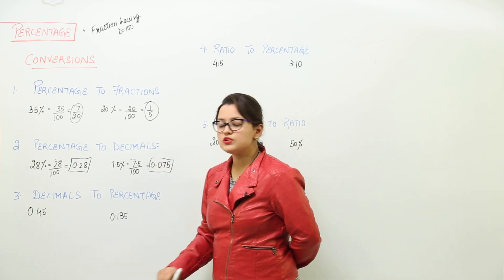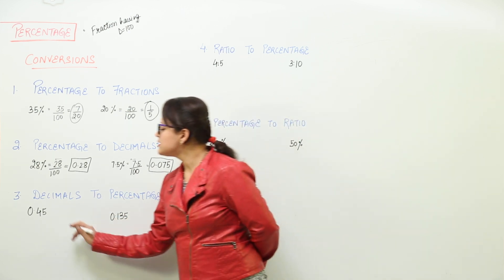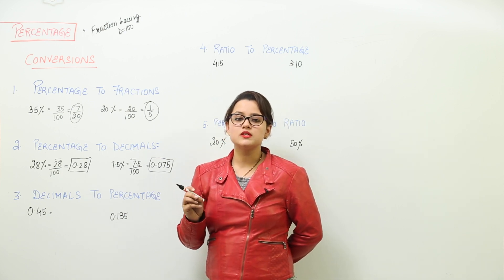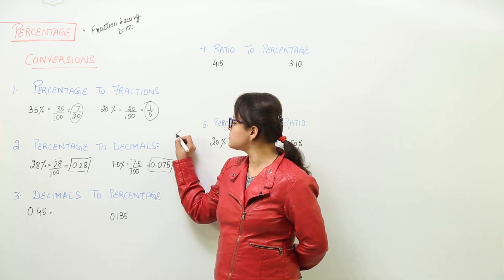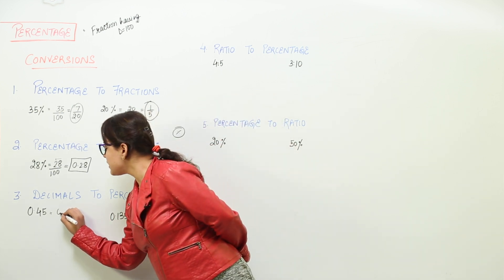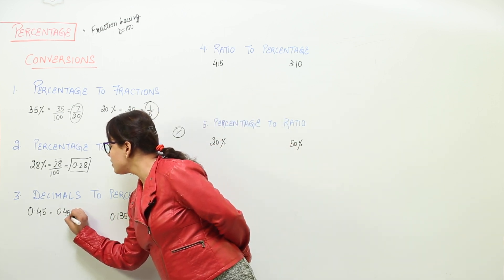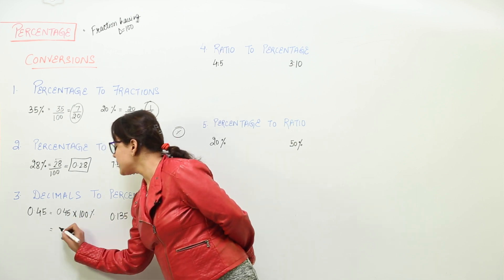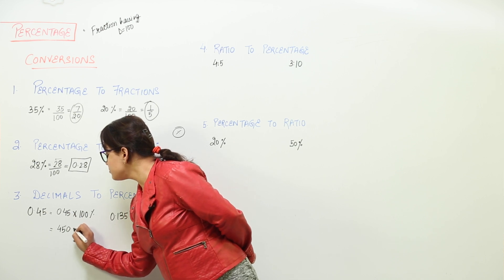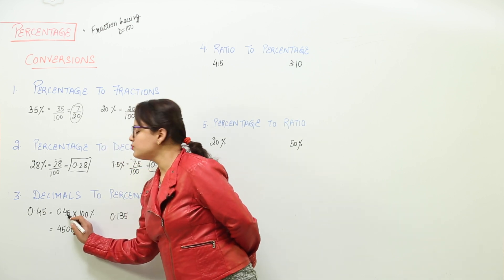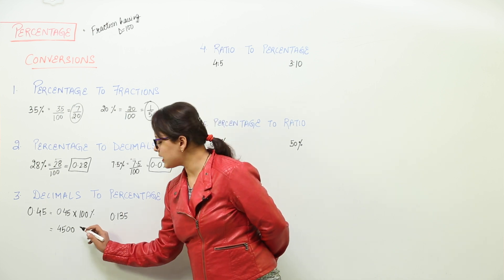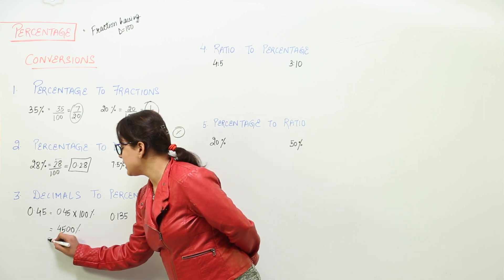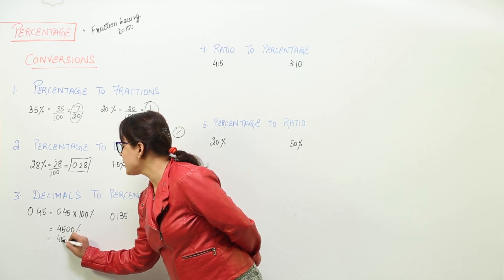Next is the conversion from decimals to percentage. As we know, the percentage is written with the percent symbol. We just multiply 0.5 with 100 percent. When you multiply these, you write 4, 5 with two zeros, and the two decimal places are to be put. We start counting from the rightmost part and put the two decimal places, making a percentage sign. That leaves us with 45 percent.